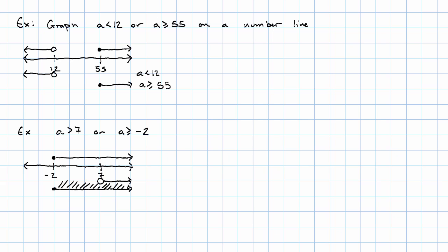So we have this compound inequality just means A is greater than or equal to negative 2. The A is greater than 7 part isn't allowing any extra points in.